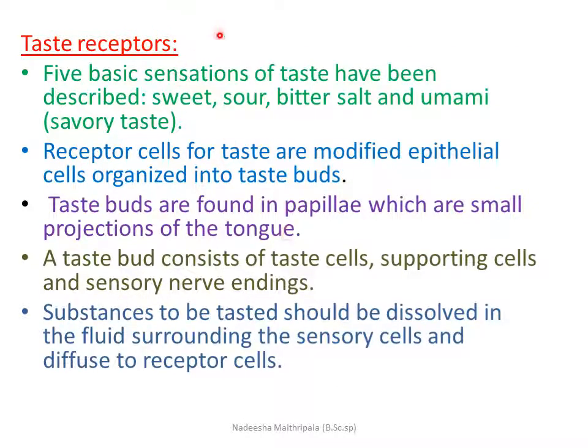Under chemoreceptors, the first type is taste receptors. There are five basic types of taste sensed by our tongue: sweet, sour, bitter, salt, and umami (savory). The receptor cells for taste are modified epithelial cells organized into taste buds, which are found in the papillae — the small projections of our tongue. Each taste bud contains receptor cells, supporting cells, and sensory nerve endings. Substances to be tasted must first dissolve in saliva and then diffuse into the receptor cells.